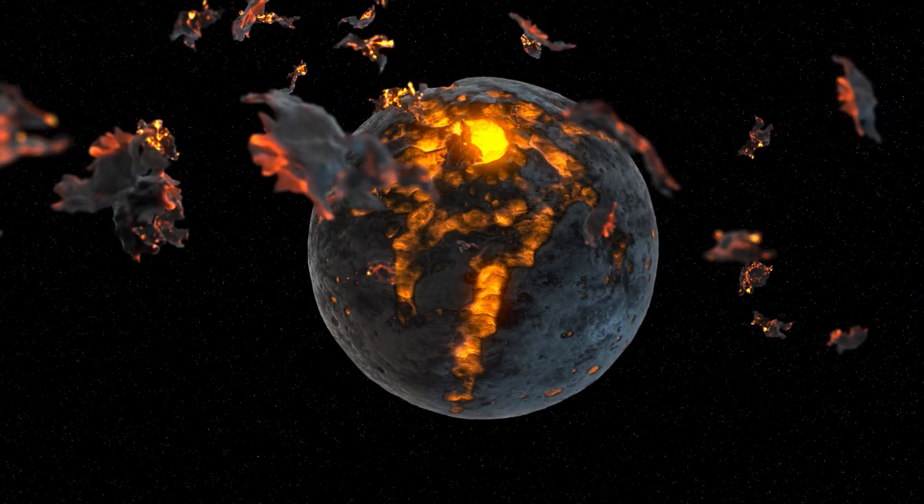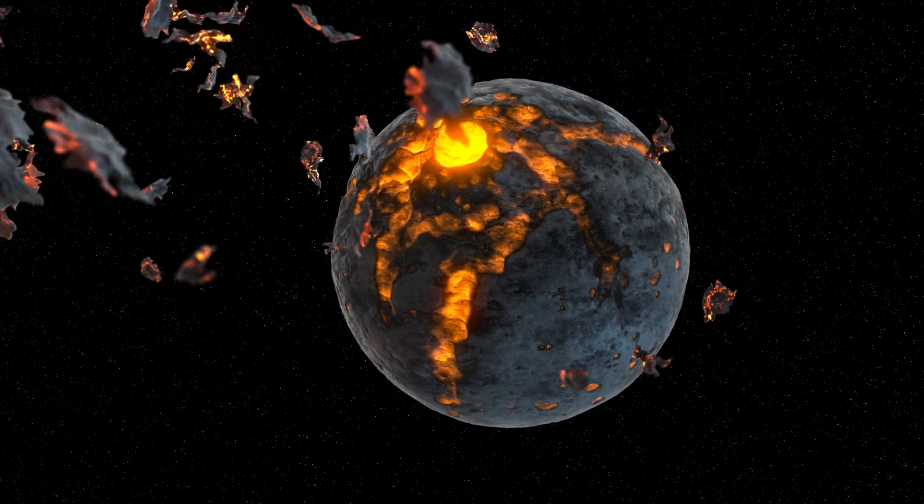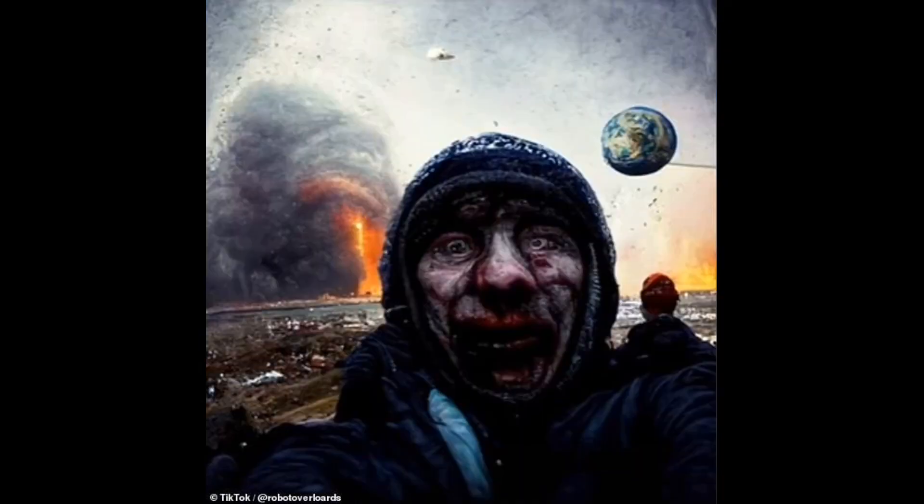Since our planet is currently experiencing a stage of global warming, the next mass extinction, according to the scientist's forecast, will occur when the temperature rises by 9 degrees Celsius. The worst-case scenario assumes that this will happen by the year 2500.